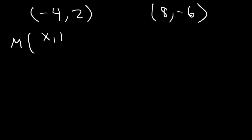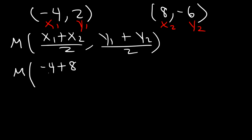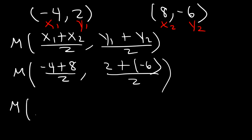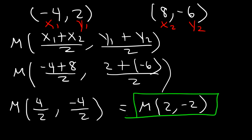Let's use the same formula. We'll call this x1, y1 and this x2, y2. So x1 is -4, x2 is positive 8, y1 is 2, and y2 is -6. Negative 4 plus 8 equals positive 4. And 2 plus negative 6, or simply 2 minus 6, is -4. Then 4 divided by 2 is 2, and -4 divided by 2 is -2. So the coordinates of the midpoint are (2, -2).